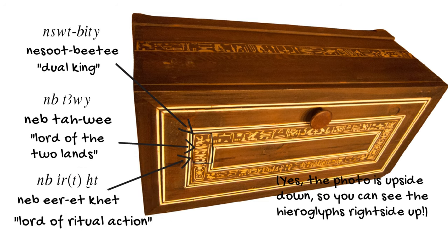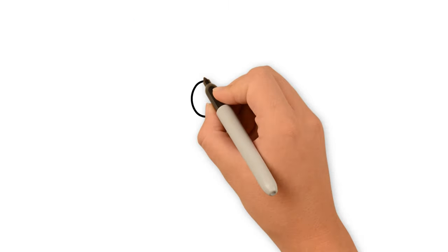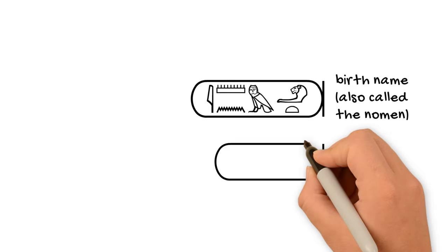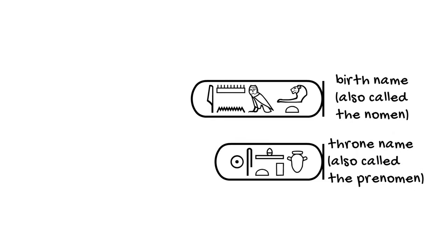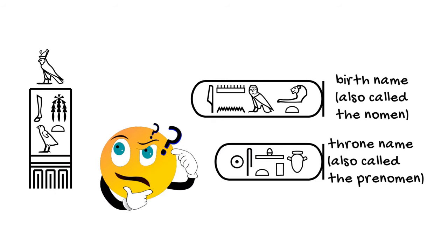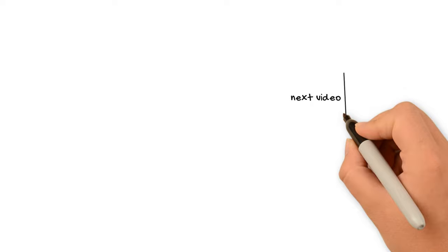And we've seen two of the five names of the king so far in this series and how they're described with that. But what about the other three names? That's what we're going to start to get into in the next video. So I'll see you there.